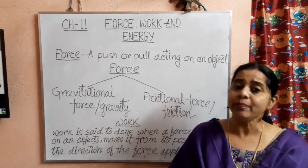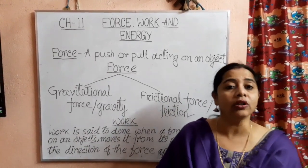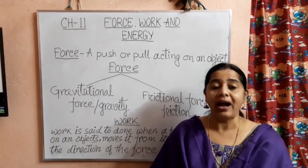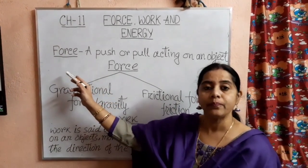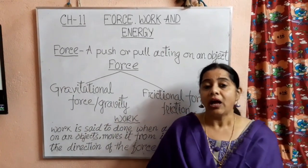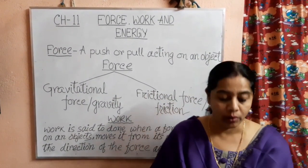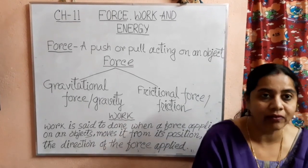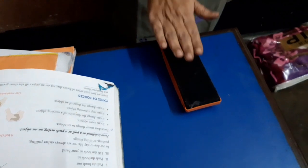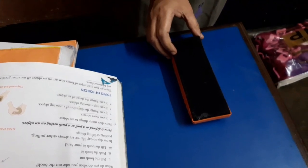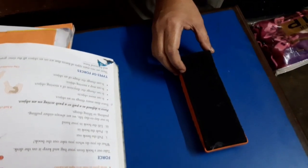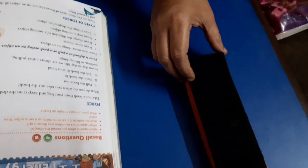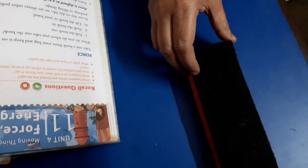Let me explain how these four things are done by applying force. A force can make an object move. You can see here on my table — this is the duster. Now it is in rest position, it is not moving. But when you apply force on it, means you are pushing the duster, it is moving and it comes to this position.